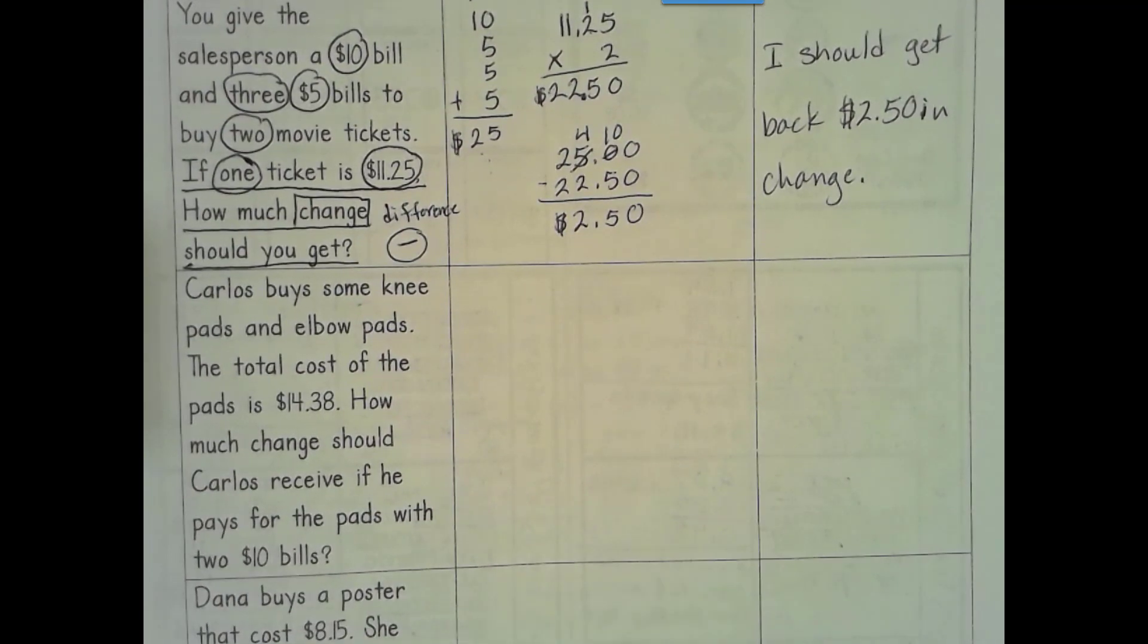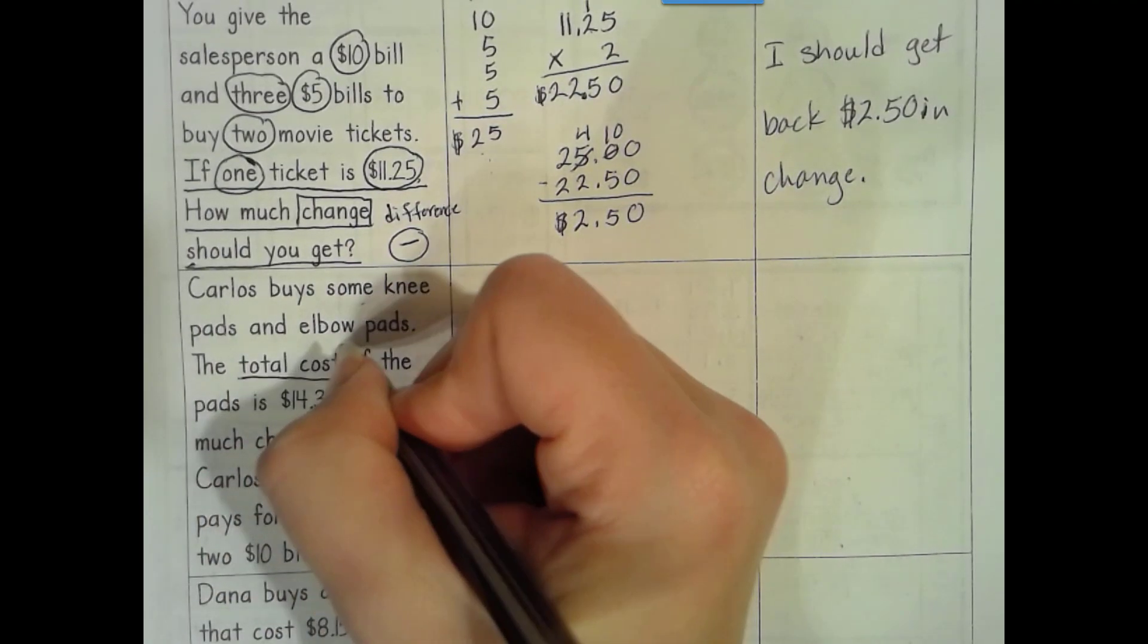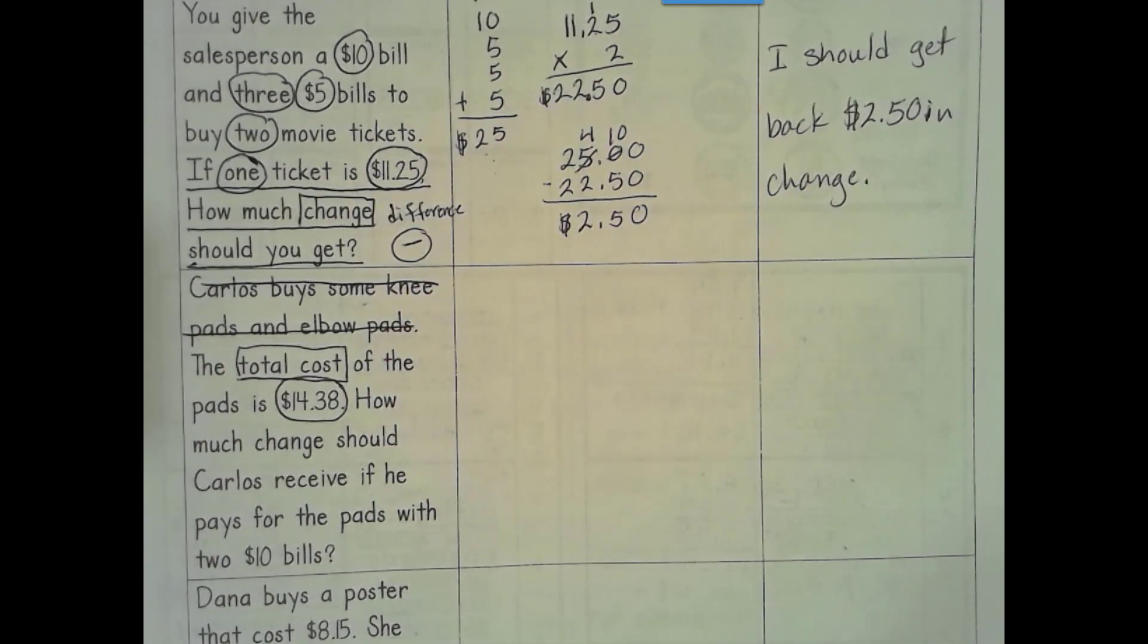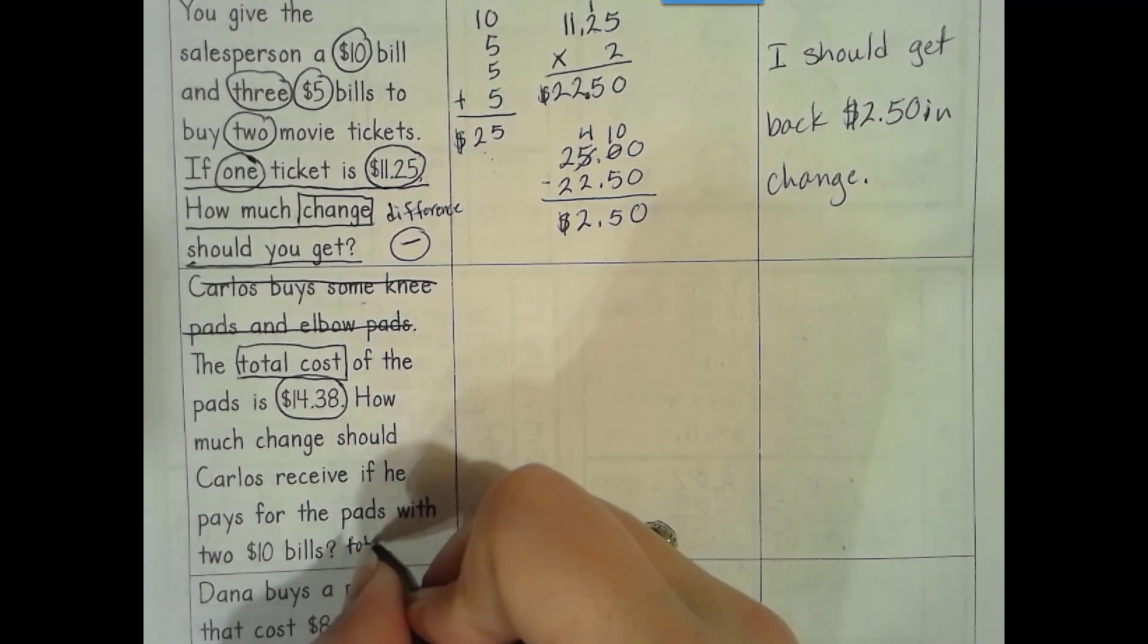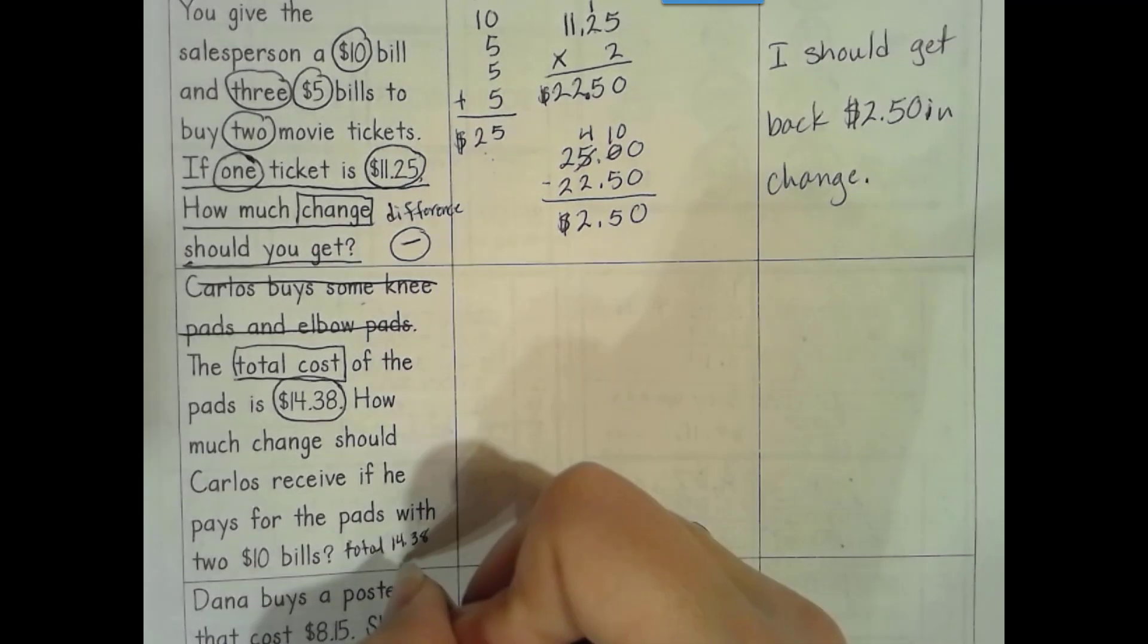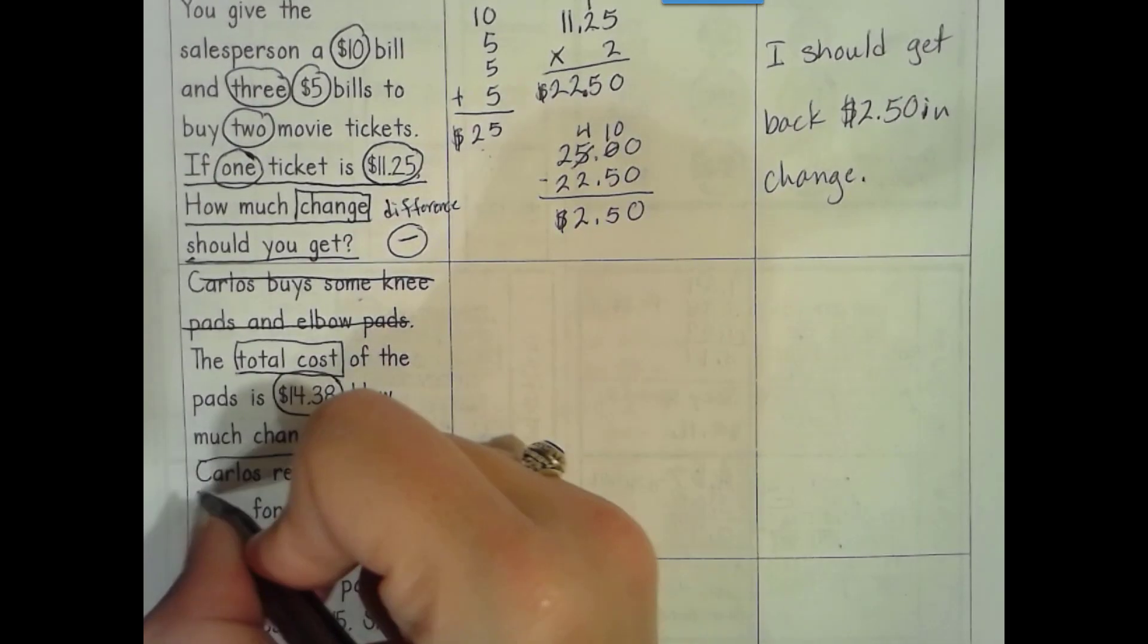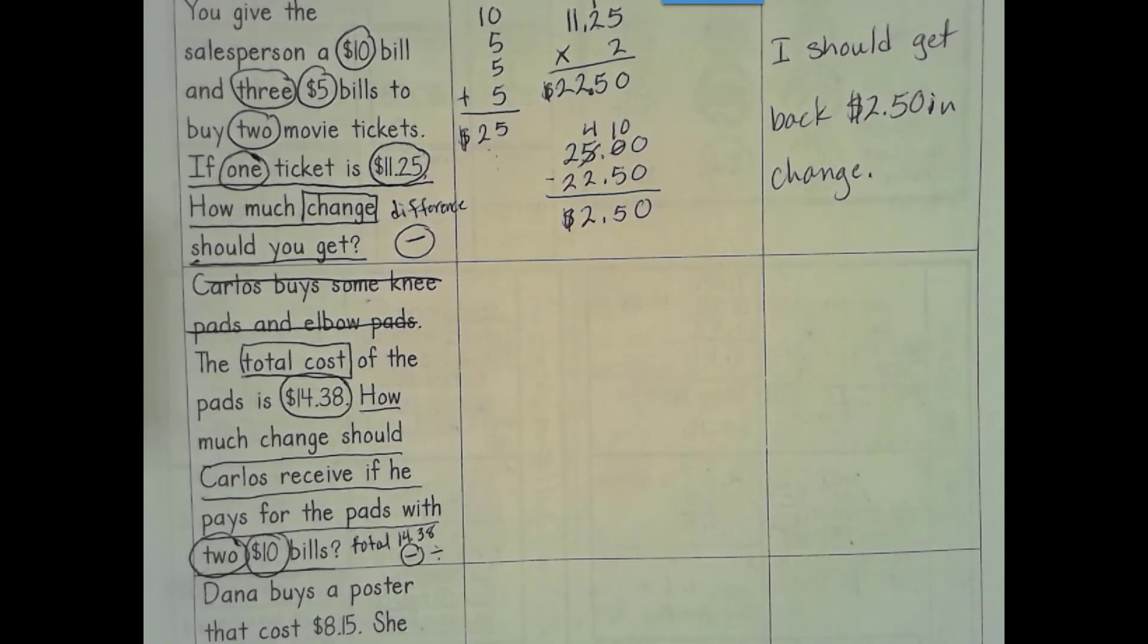Carlos buys some knee pads and elbow pads. The total cost. So total cost. This is important. Of the pads is $14.38. It really doesn't matter what he's buying. That's extra information. Total cost. That's important. We know when we know the total. We do know it. It's $14.38. Then we usually subtract or divide. It's probably not going to be equal groups. So we will be subtracting. How much change should Carlos receive if he pays for the pads with two $10 bills? Okay. Two $10 bills. Well, what's that? If I have two $10 bills, that would be $20 that I have.